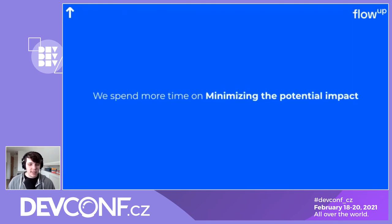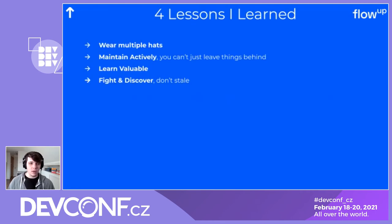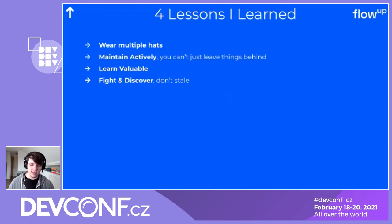So what do we do instead? We spend more time minimizing the potential impact of failures. These are my lessons from five years of doing this. Take something, leave something behind — these are the four lessons: first, wear multiple hats; second, maintain actively; third, learn valuable things and understand their value instead of chasing other metrics; and fourth, fight and discover — don't stale.